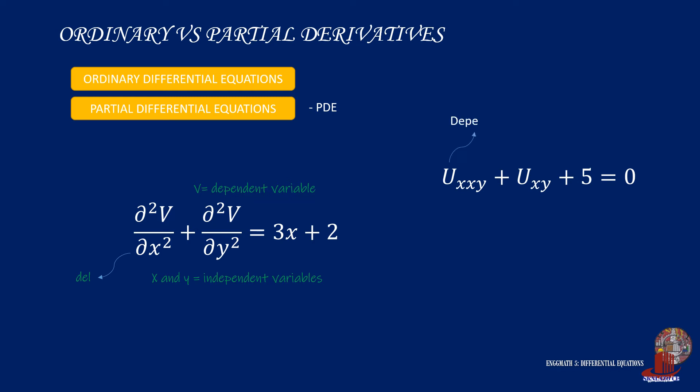The base is the dependent variable and the subscripts are the independent variables. Also observe that the first term has a subscript of x and another x, then y. The double x would mean the second derivative of the dependent variable with respect to x. So this equation can be written as, which is read as the second partial derivative of u with respect to x and y plus 5 is equal to 0.